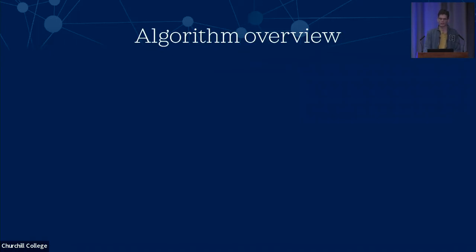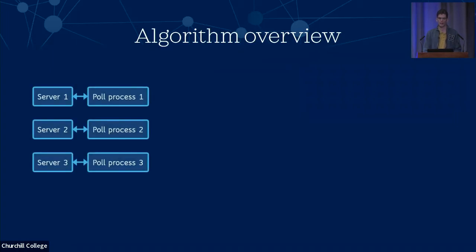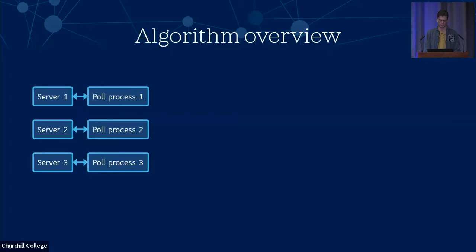Let's have a look at an overview of the different stages of our algorithm. We start by polling multiple different servers at a variable interval designed to maximize accuracy whilst minimizing network traffic. The default values are 64 seconds on startup, and then when synchronization is stabilized that goes up to 1024 seconds, about 17 minutes. At this stage we do some sanity checks on the packets like checking for duplicates, synchronization loops, or any other invalid packets, which we discard. For each packet we calculate the offset and the delay to that server.